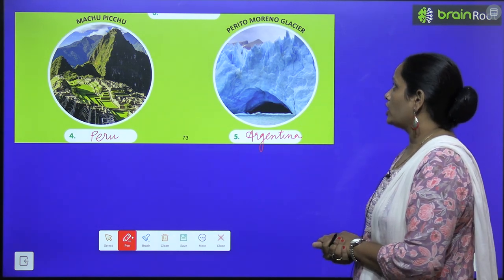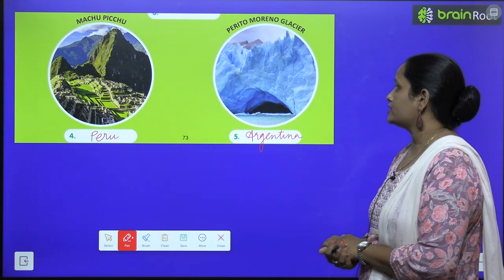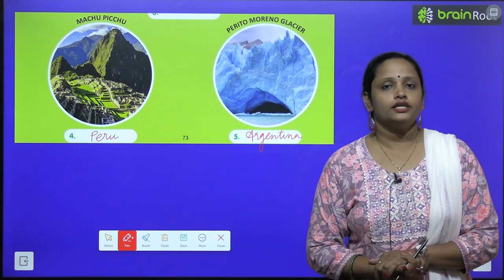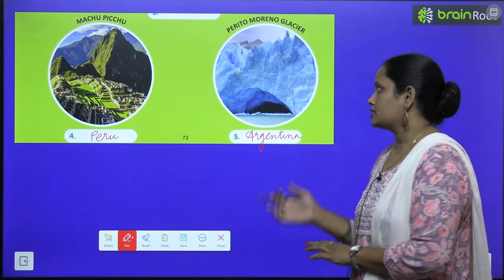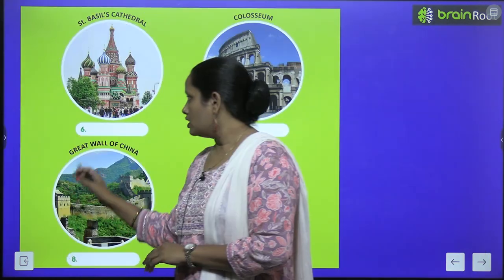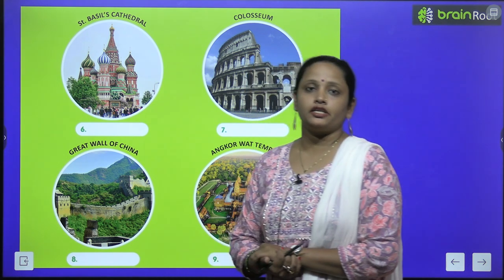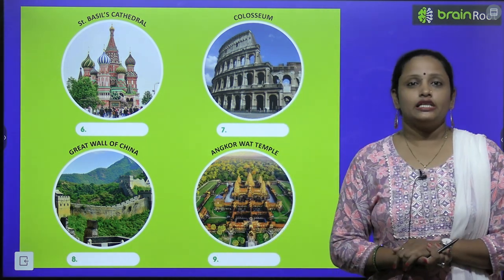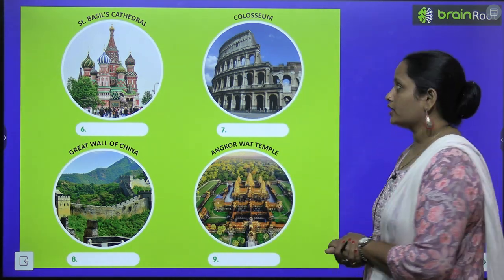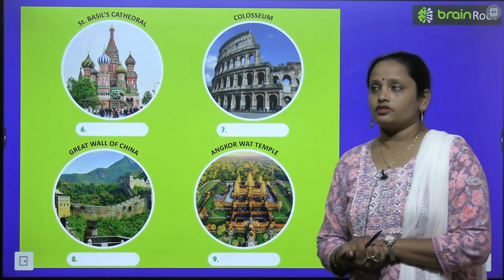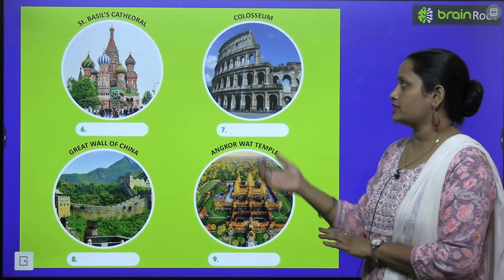The next is the Perito Moreno Glacier, which is located in Argentina. This is a glacier. Similarly, children, you have to find where these places are located. St. Basil's Cathedral Church — where is it?